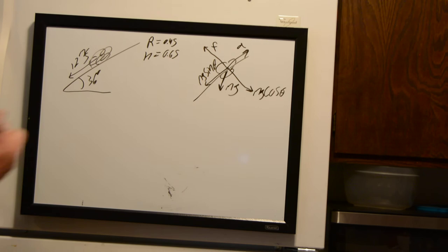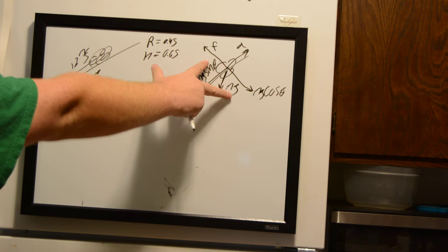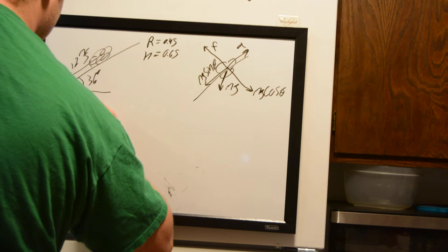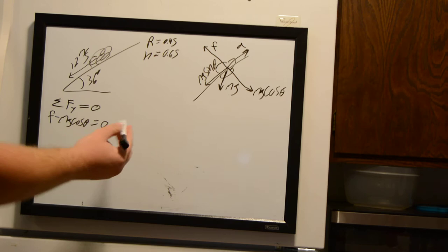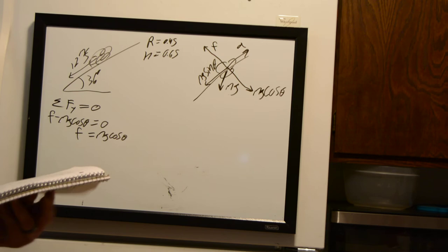First, we want to use Newton's laws to know that the sum of forces in the y, or upward, direction is going to be equal to zero. So we have F minus mass times gravity times the cosine of theta equals zero. From this equation, we know that our normal force must therefore equal mass times gravity times the cosine of theta.